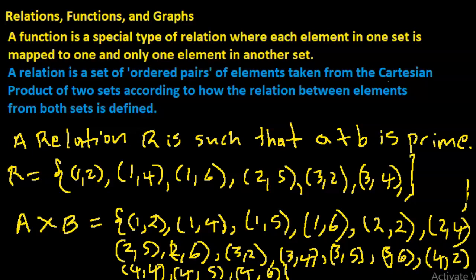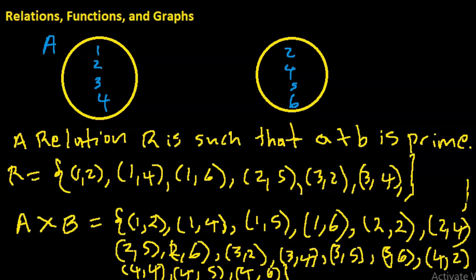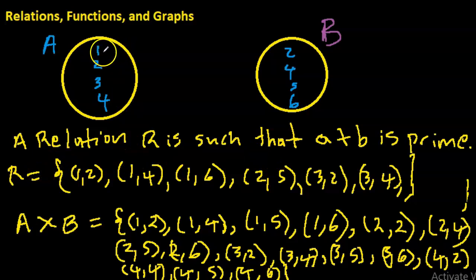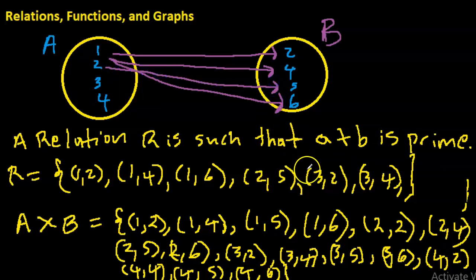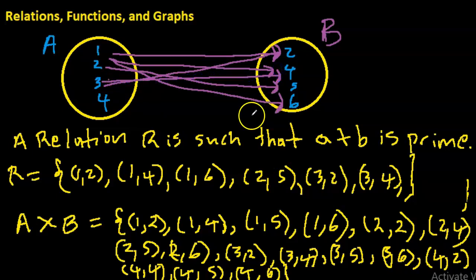One of the ways we use to represent relations is through mappings. Let's do the mapping for this relation: one maps to two, one also maps to four, one maps to six, two maps to five, three maps to two, three maps to four. We can always use mappings to represent a relation. Now I could ask: is this relation a function?